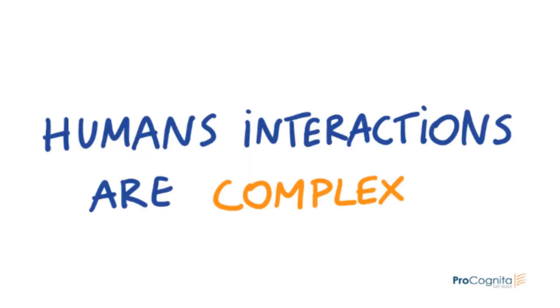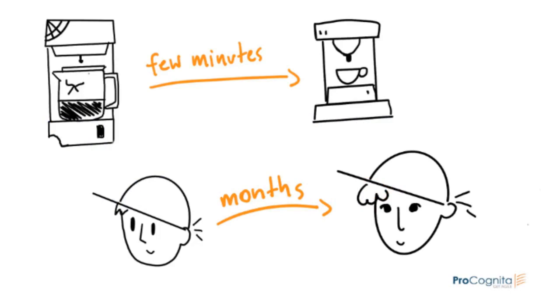Human interactions are complex. It takes a few minutes to unplug the coffee machine and install a new one. It takes months to replace a member of the team.